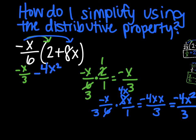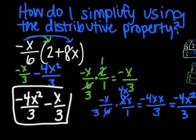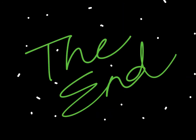You also want the highest powers to come first, not just ABC order. So move negative 4x²/3 to the front, then negative x/3 after it. Final answer: negative 4x²/3 − x/3. That is the end of your video — thanks for watching, have a great day.